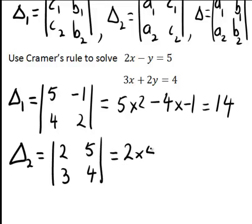which gives us 2 times 4 minus 3 times 5, giving us a value here, 8 minus 15 is negative 7 for delta2.